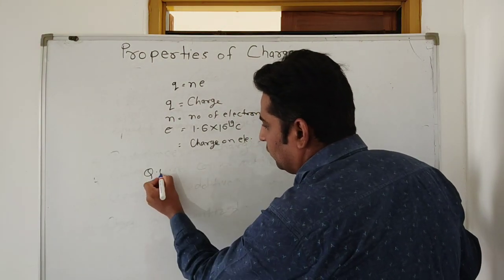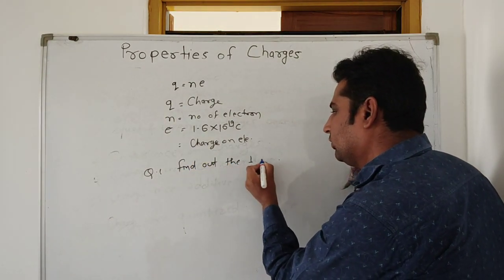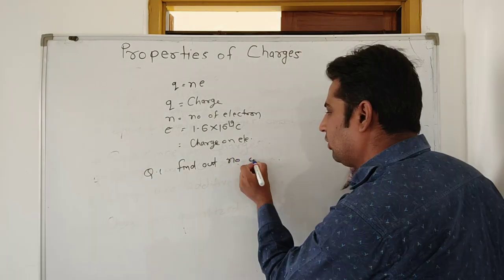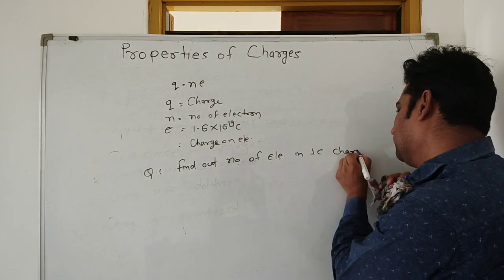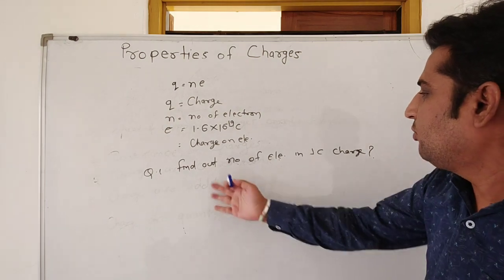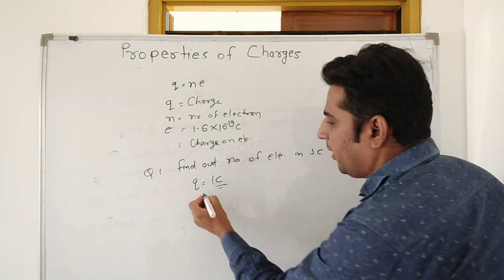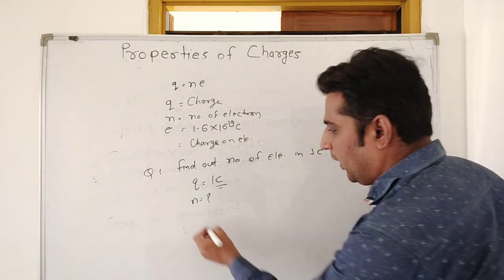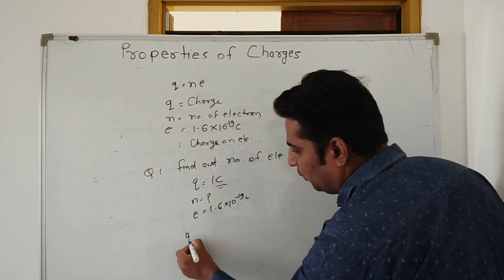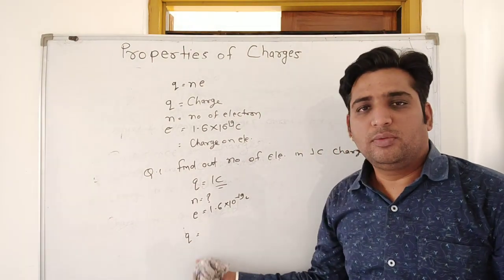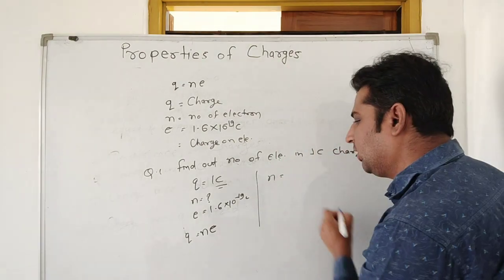Here is a question: find out the number of electrons in 1 coulomb of charge. Q is given as 1 coulomb, and we have to calculate N. We know e = 1.6 × 10⁻¹⁹ coulombs. According to quantization of charge, Q = Ne, so N = Q / e.